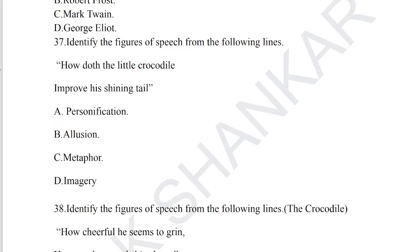Question number 37: identify the figure of speech. 'How does the little crocodile improve his shining tail?' 'His' refers to the crocodile — an inanimate or non-human object is given human attributes. Option A, personification, is the correct answer. Question number 38: 'How cheerfully he seems to grin, how neatly spreads his claws.' Again, 'he' and 'his' are attributed to the crocodile — personification. Option A is the correct answer for question number 38.